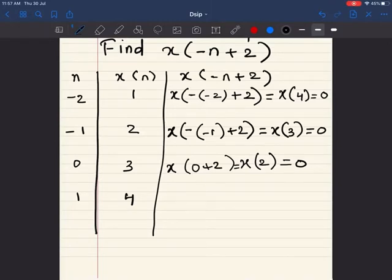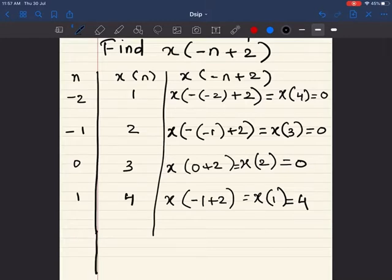Here we are going to substitute x(-1+2), so we have the value of x(1) which is 4. Now, we have 3 zero values and we have 1 non-zero value. So we are going to need 3 more non-zero values in order to make a graph.